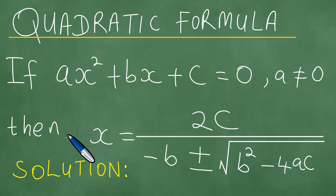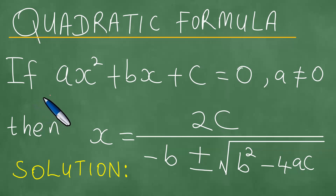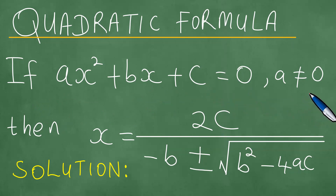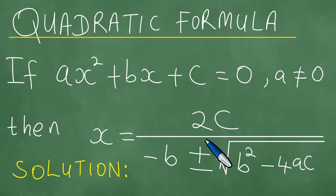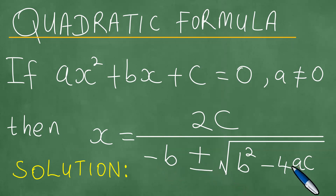What we have in front of us is the most famous quadratic formula. If ax squared plus bx plus c equals 0, with a not equal to 0, then x equals 2c divided by minus b plus or minus the square root of b squared minus 4ac. This is the quadratic formula.